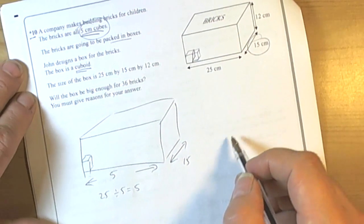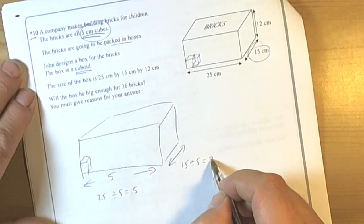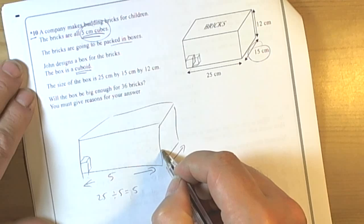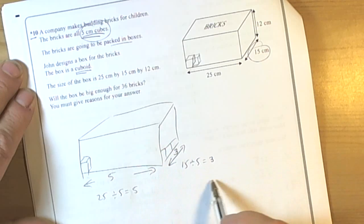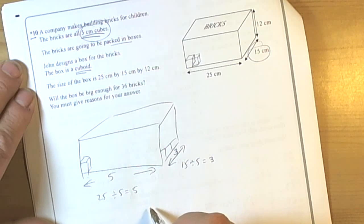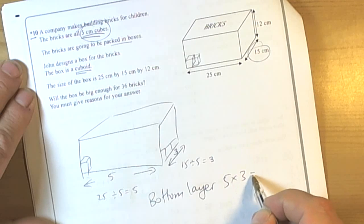This length is 15cm, so 15 divided by 5 is 3. Along here, we can go back 3 bricks. So on the bottom layer, we can fit 5 times 3, which is 15 bricks.